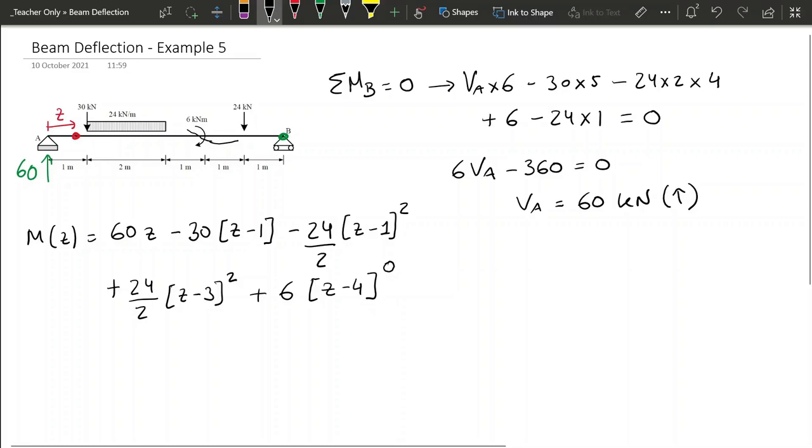And finally, we have that load of 24, so minus 24, and then z minus 5. In short, we need to add these Macaulay functions in the point of applications of the load, and then in case it's a concentrated moment, we put exponent of 0, like this one.